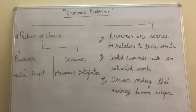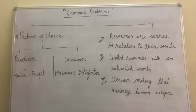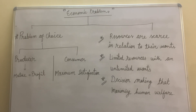This leads to decision making that maximizes human welfare. A producer has to make decisions — what to produce and how — so as to maximize consumer satisfaction and human welfare. Economic problems arise from this need for decision making, where choices must be made to best serve society given limited resources.